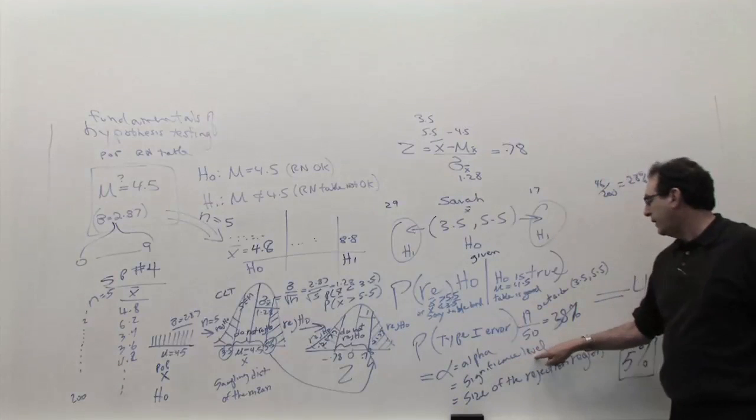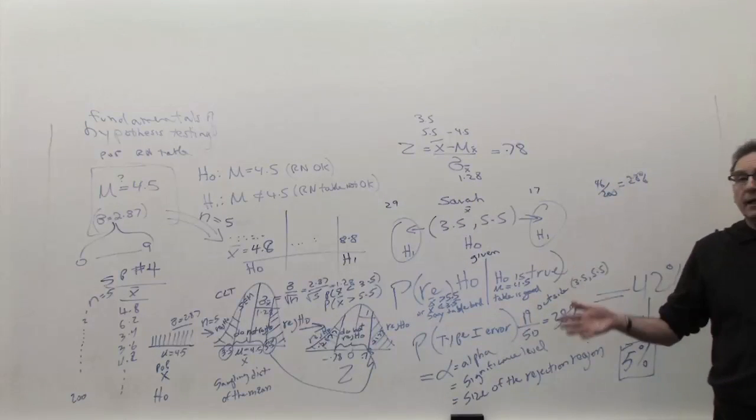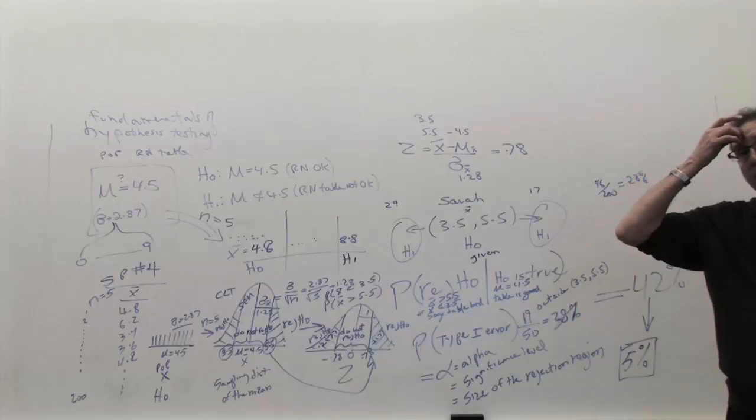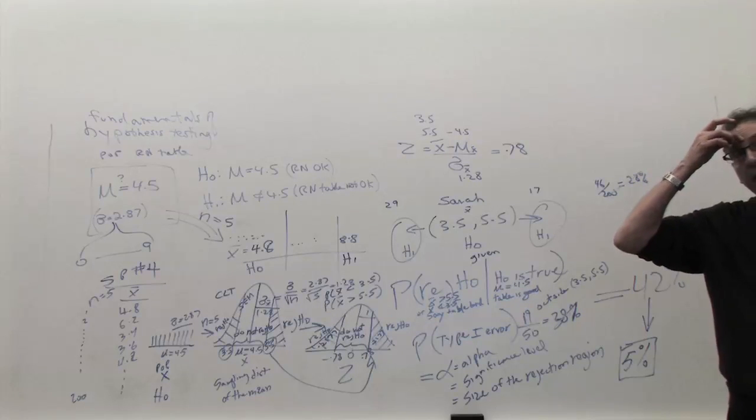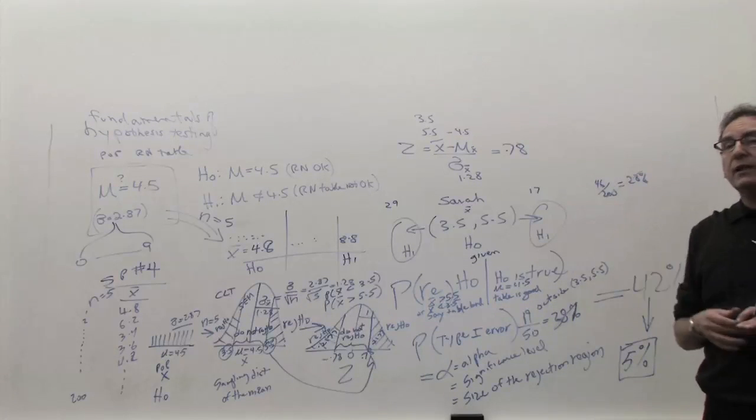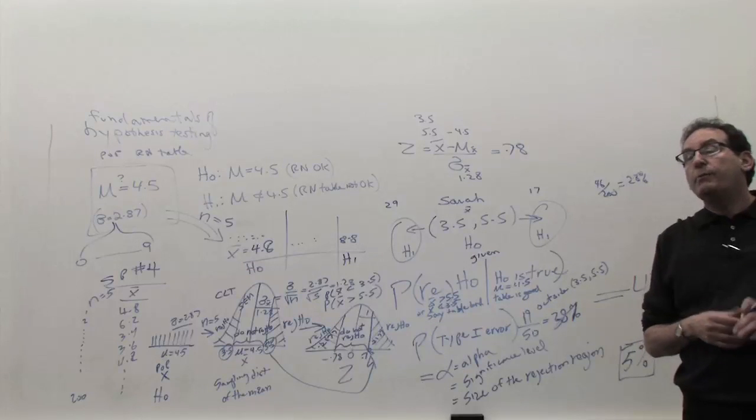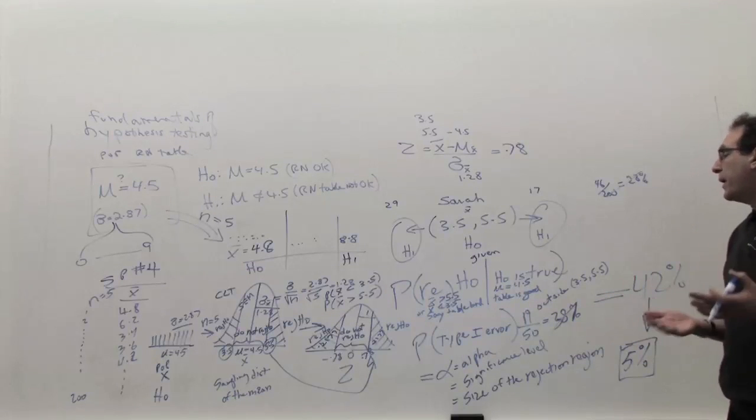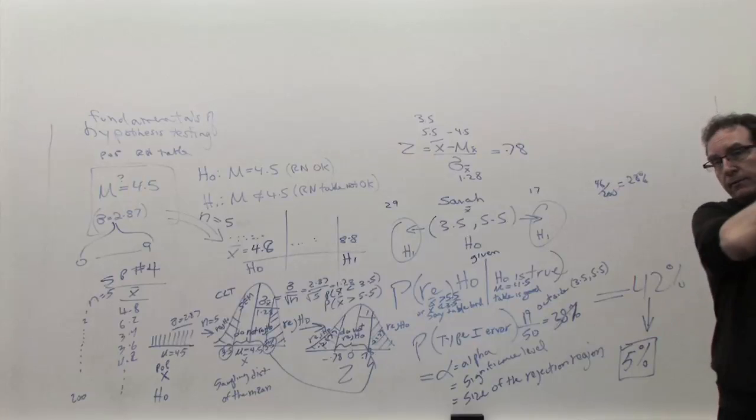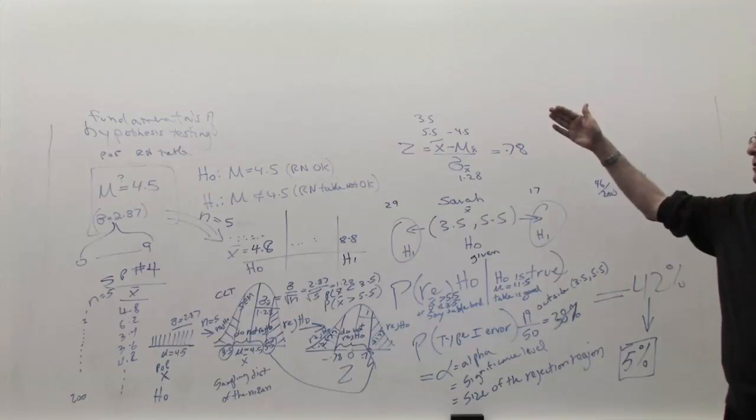Use an alpha of 5%. Use a significance level of 5%. Sometimes you'll see 10%. Some of the spinner assignment tells you to do 20%. Sometimes you do 1% in real life. But 5% is like almost always 5%. That's the percentage, right? 1 out of 20. You're willing to make a mistake 1 out of 20 times, which is not so terrible.